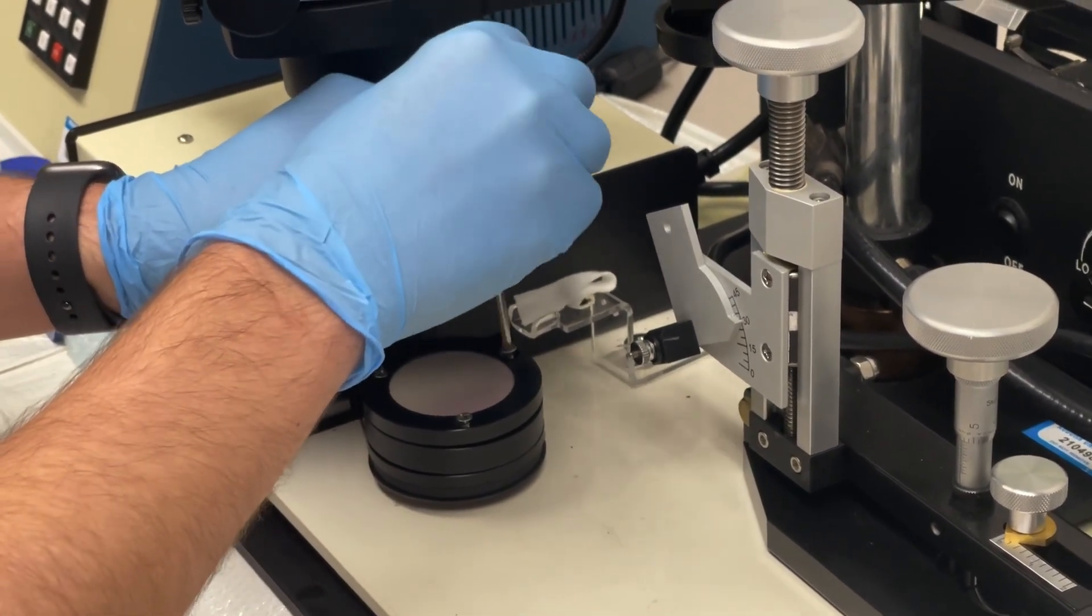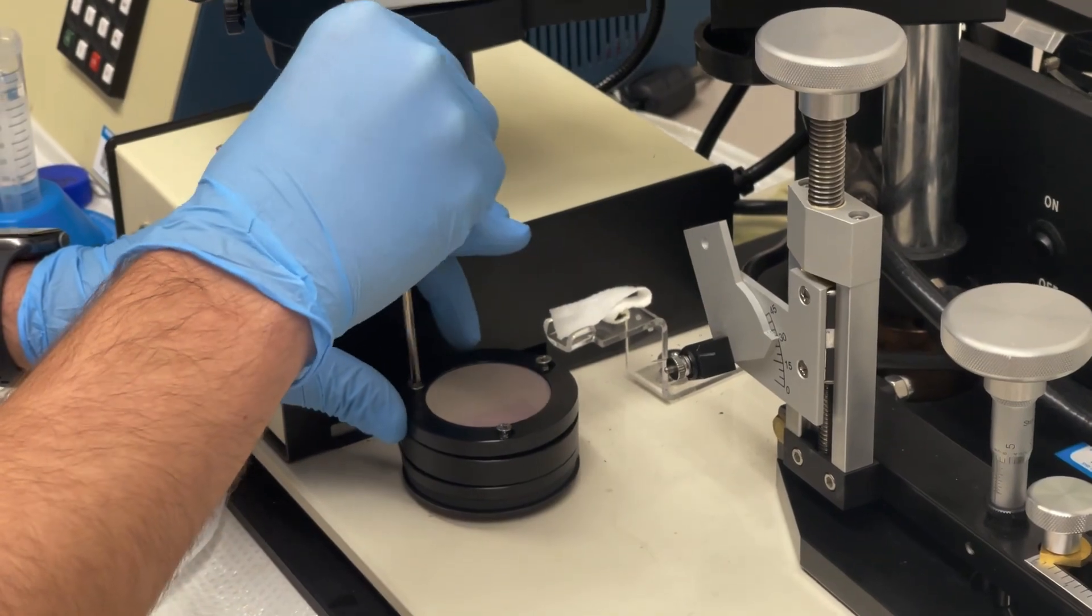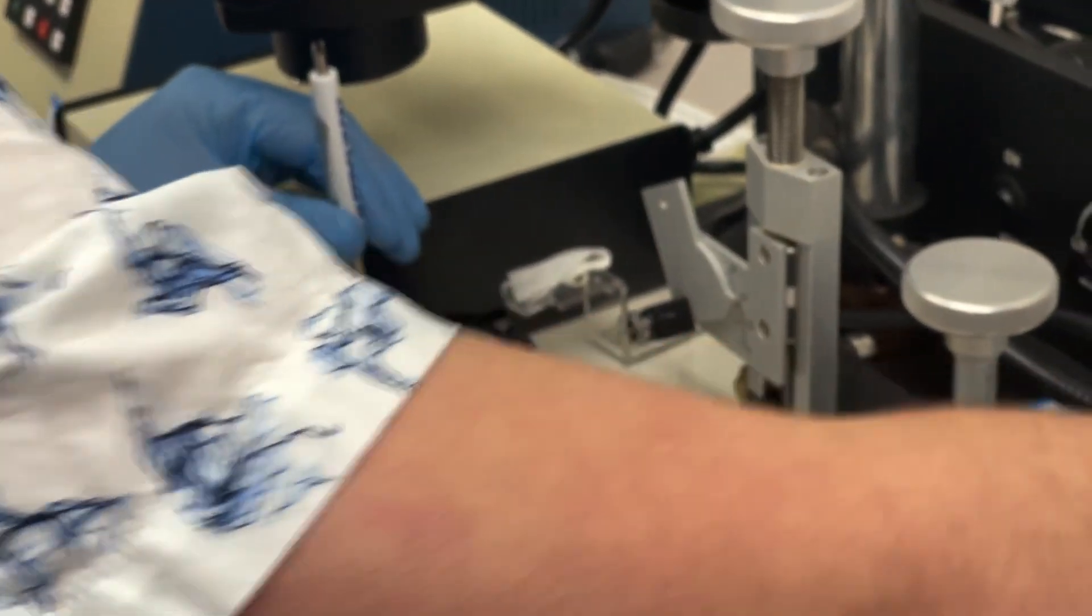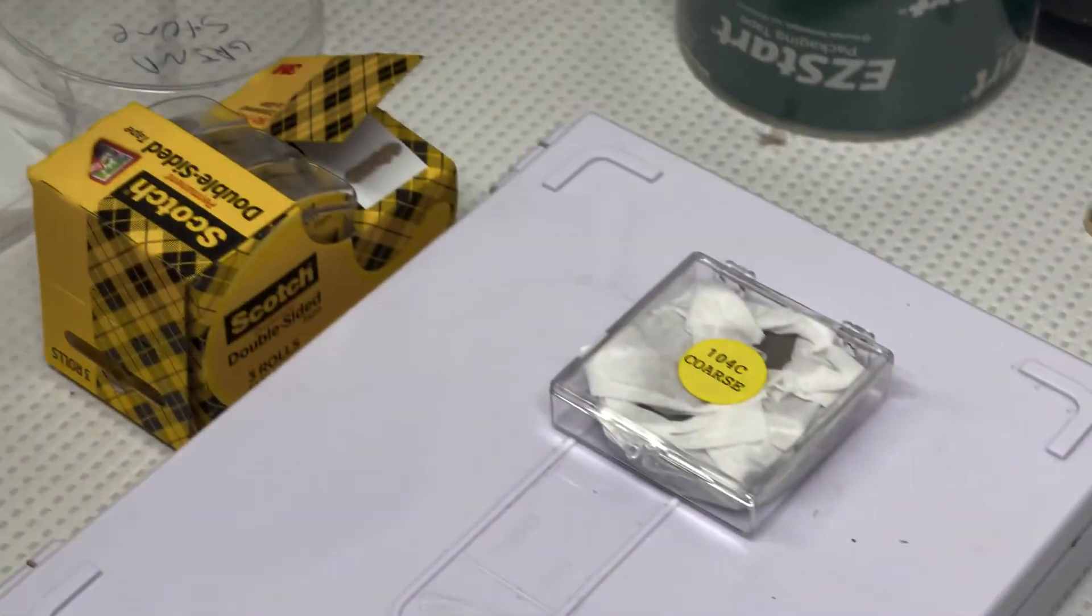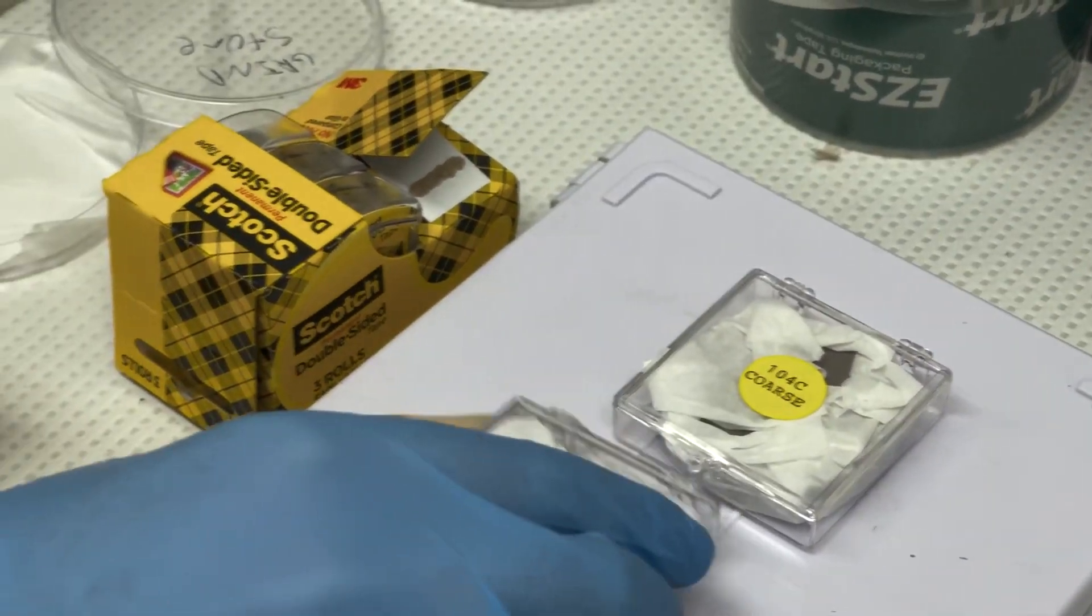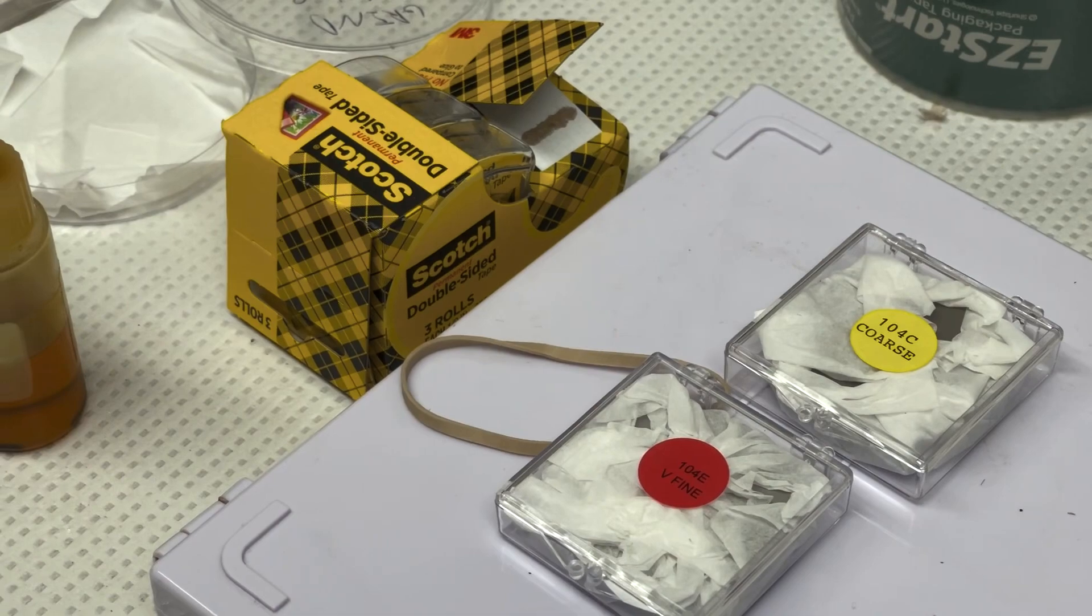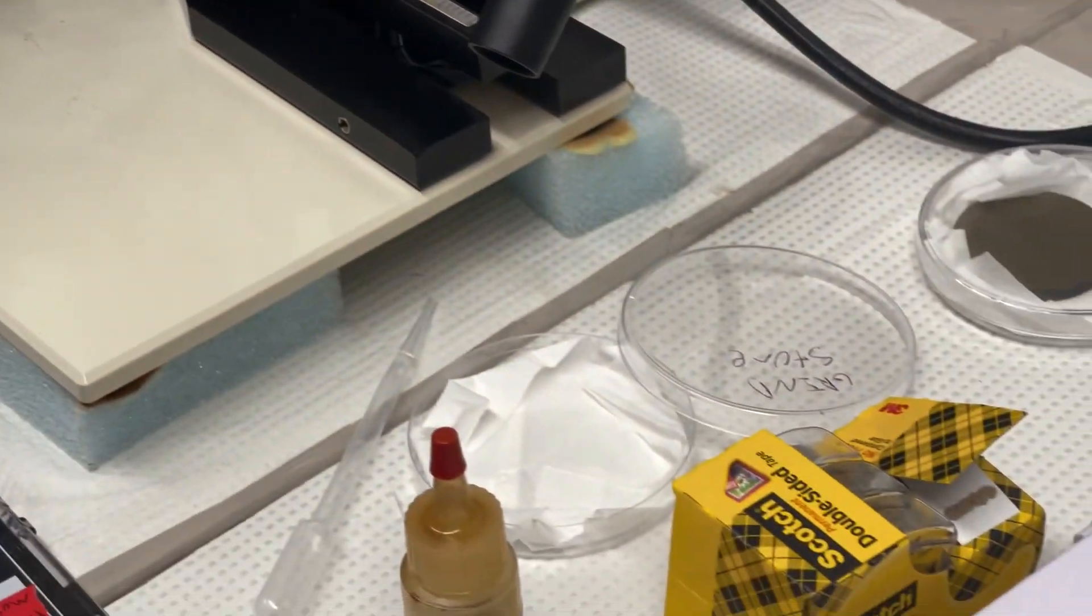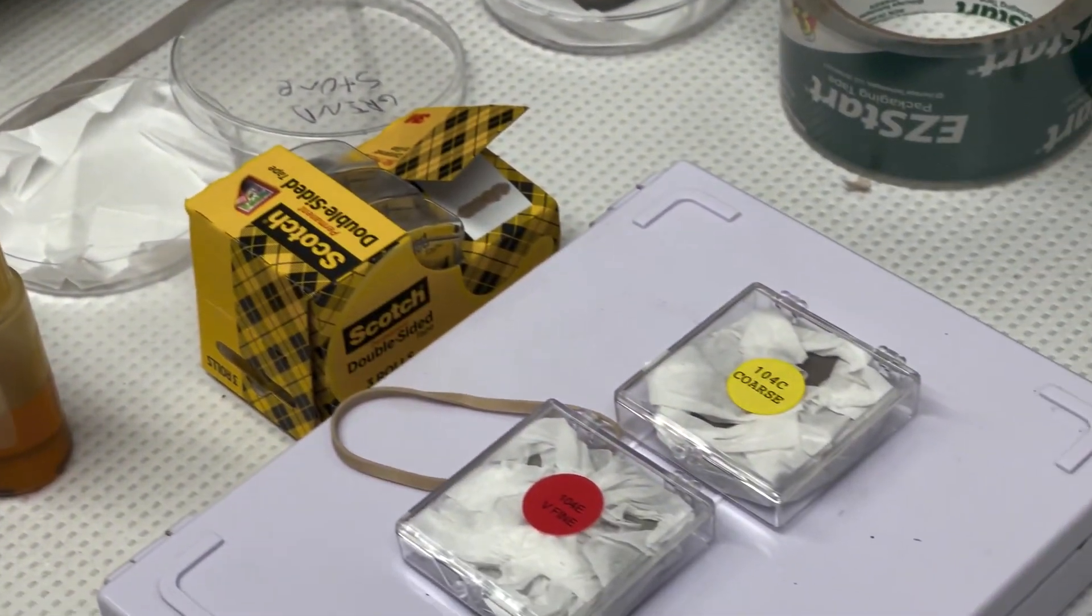They'll come labeled: they'll have coarse, then they'll have very fine, and then they'll have fine. This is very fine. This is the one that came with yours. So you take it apart, remove the grindstone.